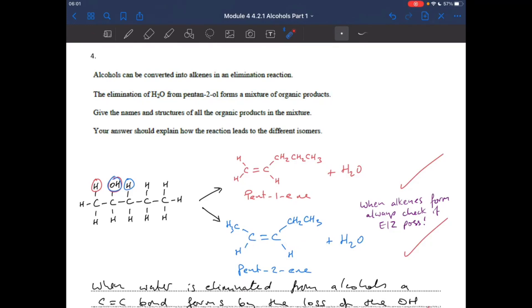Now I've just written a little note to self there. When alkenes form, always check if EZ is possible. So that one can't, because they're both hydrogens. When you've got the same atom on one of the carbons of the double bond, you can't get EZ.